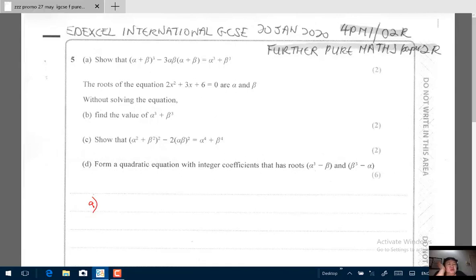So basically this question says sum of roots cubed minus 3 times product of roots times sum of roots equals sum of the respective roots cubed.